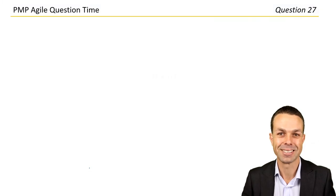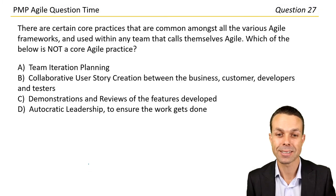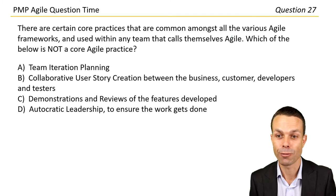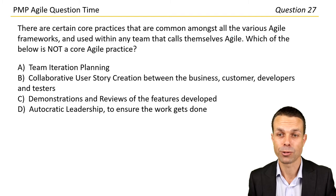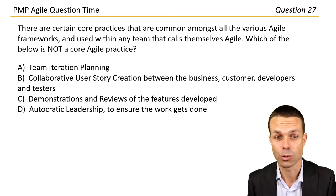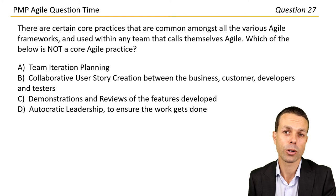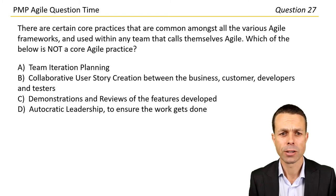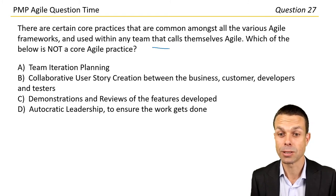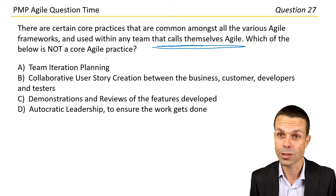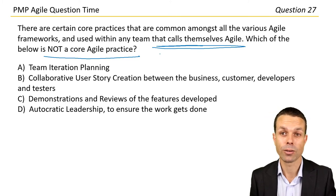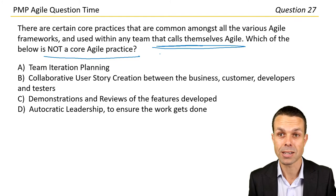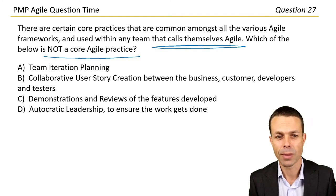Let's get into the questions. There are certain core practices that are common amongst various agile frameworks. There are lots of different agile frameworks, and there are common practices between all of these different frameworks. They're used with any team that calls themselves agile. Which of the below is not a core agile practice?